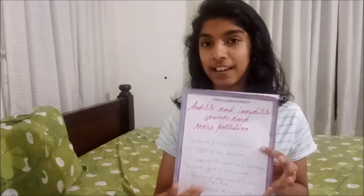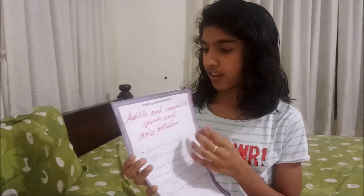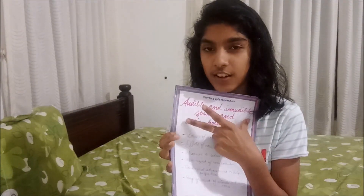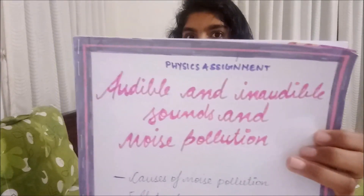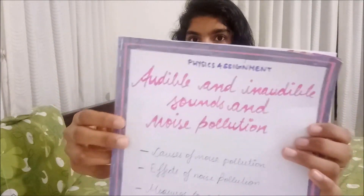Here I wrote the subheadings of the assignment. You can write the heading in the middle and write the subheadings on the next A4 sheet, and write the topic as the index. I did it this way because I forgot to write the heading in the middle and wrote it at the top instead. The borders are gray on the outside and pink in the middle.